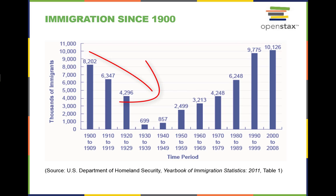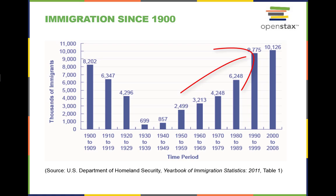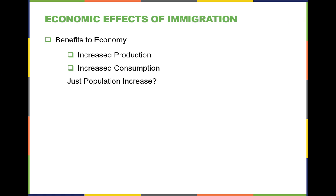In this graph, we see the historical fluctuation in immigration numbers for the U.S. The number of immigrants in each decade declined between 1900 and the 1940s, but has risen sharply in recent decades. Immigration can have both positive and negative impacts on the economy.